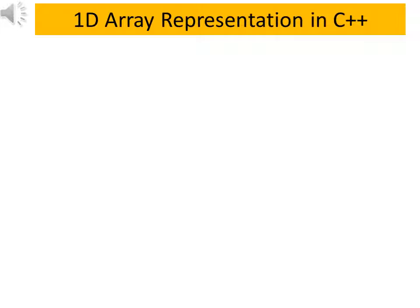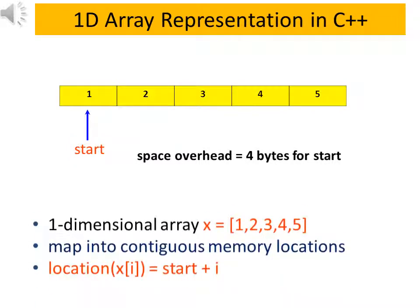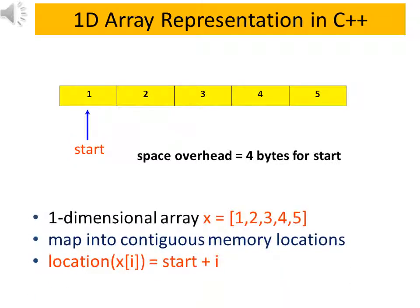Suppose we take one-dimensional array which contains five elements in array. As we know, to store the array elements in contiguous form, increment of start pointer is needed. For example, location of xi is start address of array plus ith element. This start pointer points to first element and also stores the address of the first array element.